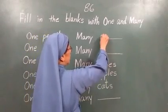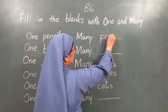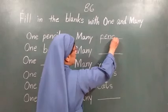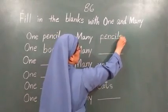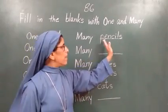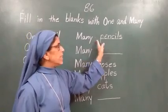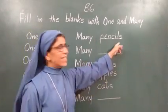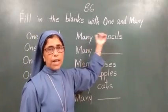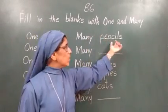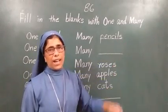Yes. Dekho, pencils ka spelling — apan paas paas mein likhna hai. Hena? Many ke baad thodi si jagah chod ke pencils likhna hai. Hena? Agar aisa likhna hai — ek shabd ke baad doosra shabd — thodi si jagah chod ke likhna hai. Lekin ek shabd ka spelling paas paas mein likhna hai. Hena? Okay.